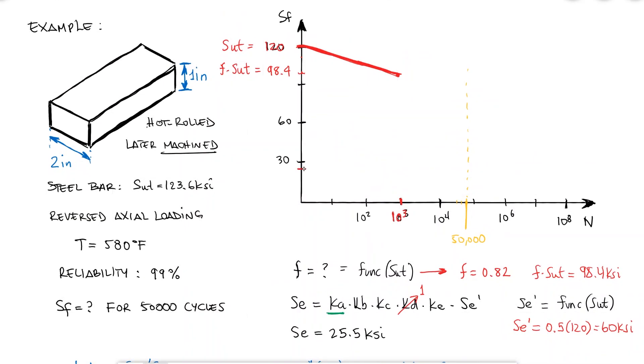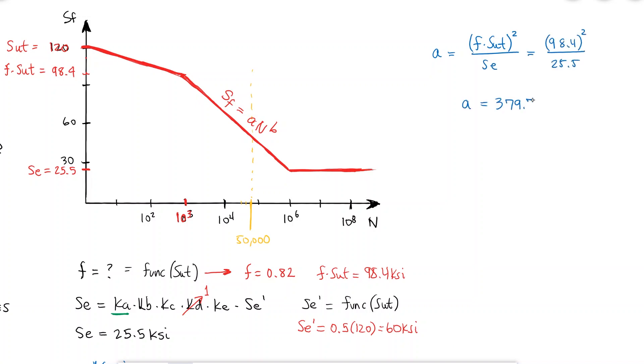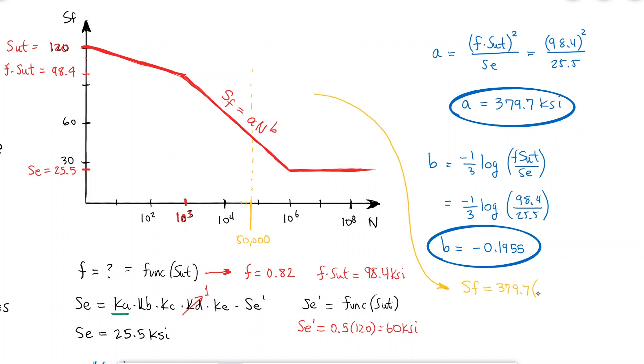And with that, I can find the fatigue strength I was looking for. The A coefficient and the B exponent can be found using the expressions we derived in the last video. And using these values together with 50,000 cycles, I find that the fatigue strength is equal to 45.8 KSI.